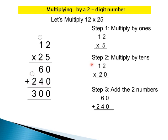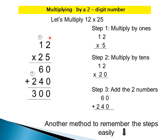Step 2: Multiply by tens. Here 2 is in the tens place, so we have to multiply by 20. First, put 0 below the ones place. Now multiply 2 times 2 equals 4 — write 4 down. Then multiply 2 times 1 equals 2 — write 2 down. It's very important to keep the numbers in a straight line. Step 3: Add the two numbers — that is, 60 plus 240. 0 plus 0 equals 0, 6 plus 4 equals 10, write 0 down and carry over 1, 1 plus 2 equals 3. So 12 multiplied by 25 equals 300.